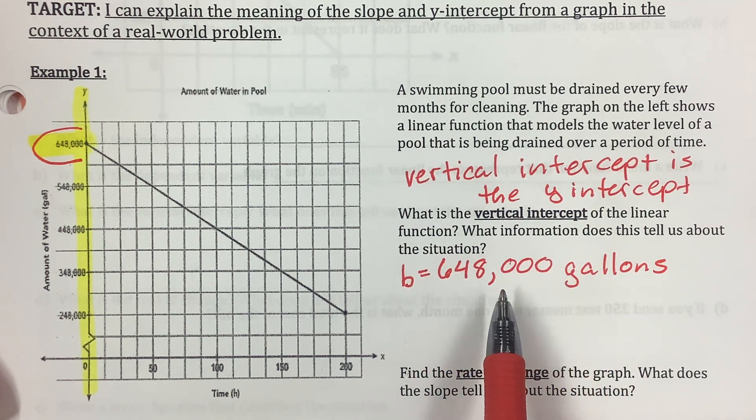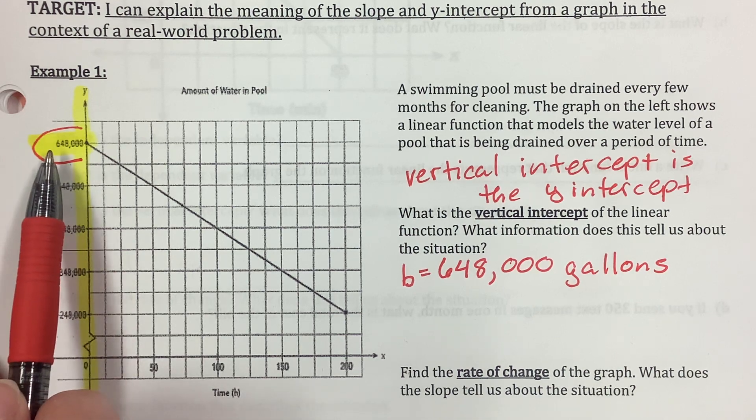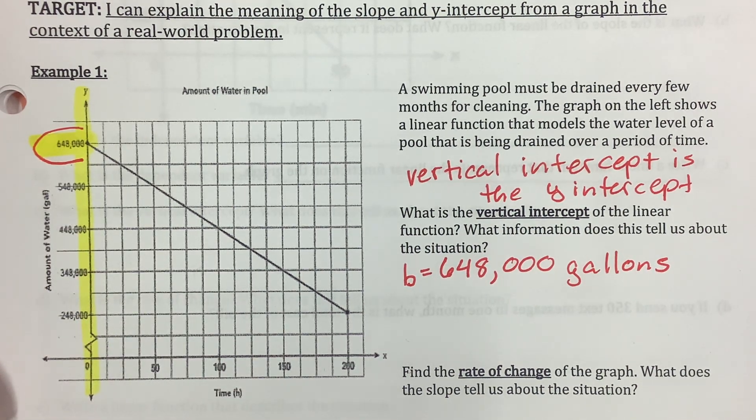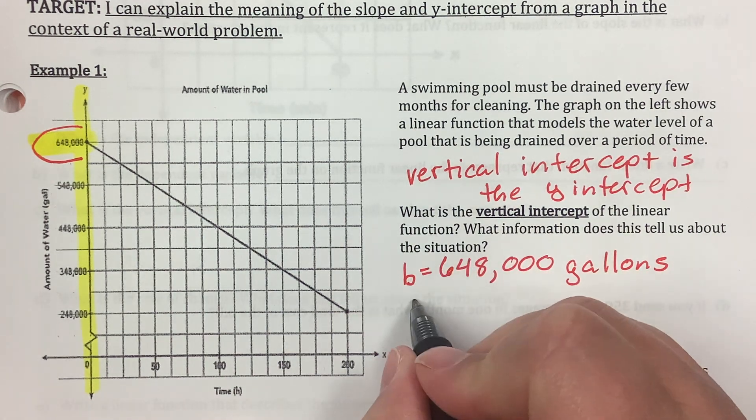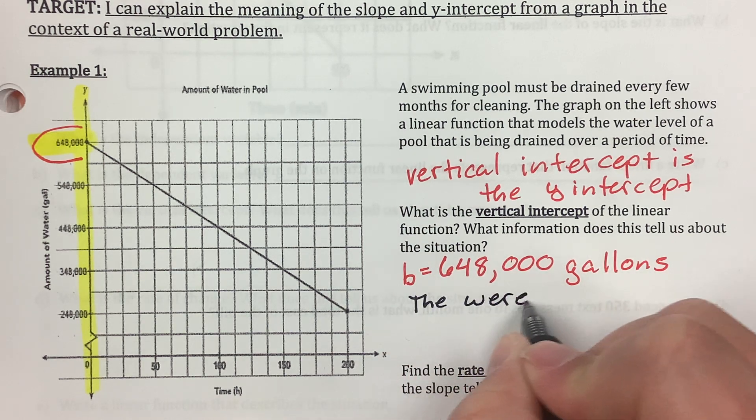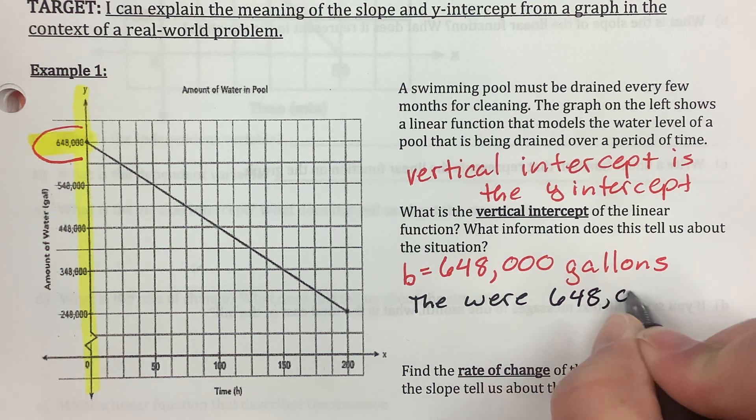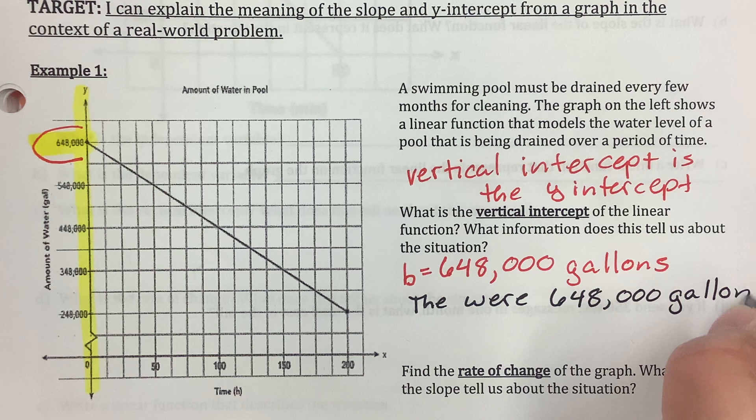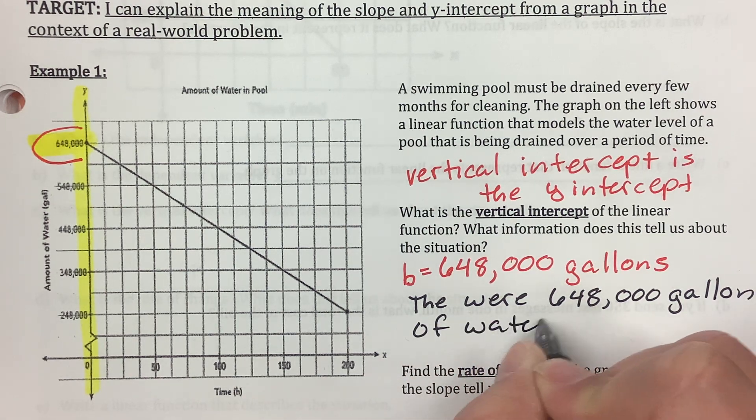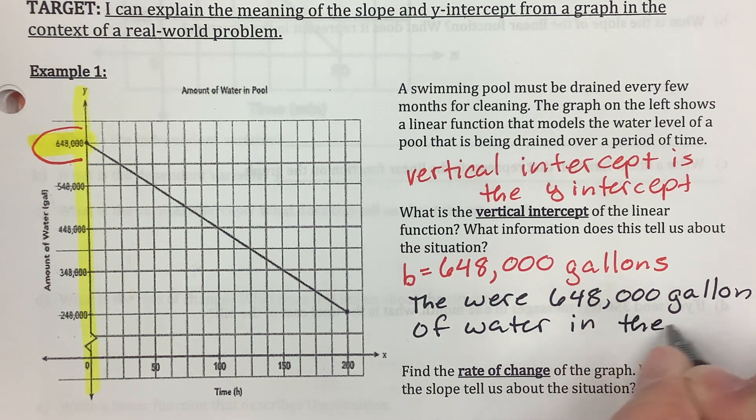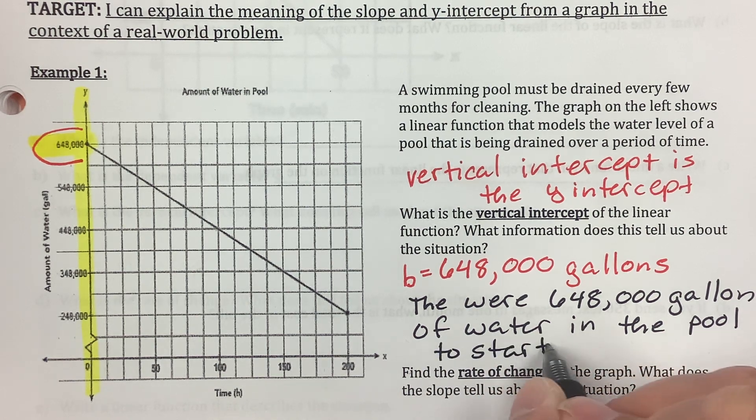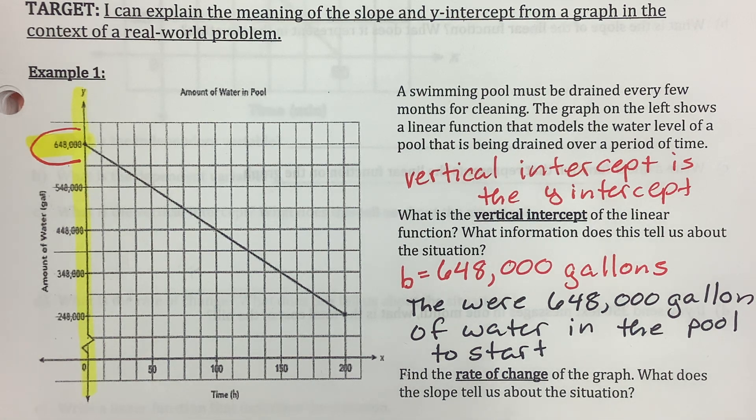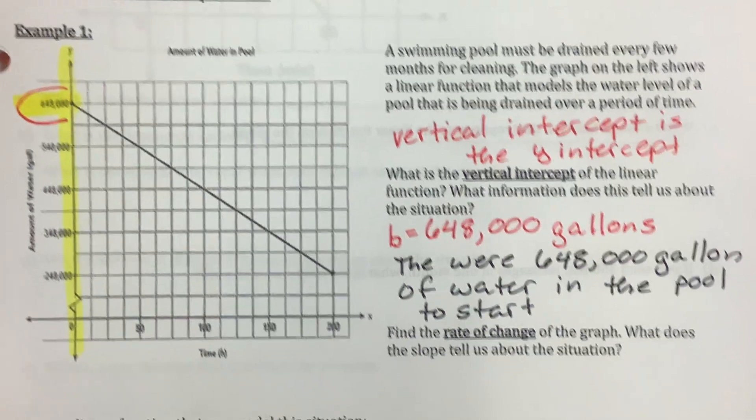What does that information tell us about the situation? Well, this is where it began before it started to drain. So, y-intercept is the beginning. So, there was 648,000 gallons of water in the pool. So, I'm going to write that down. There were 648,000 gallons of water in the pool to start.